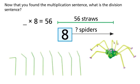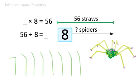Now that you've found the multiplication sentence, what is the division sentence? John can make 7 spiders.